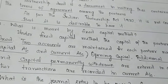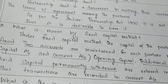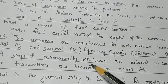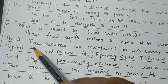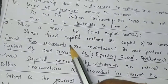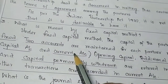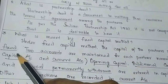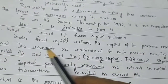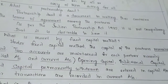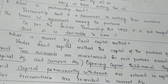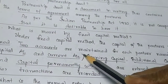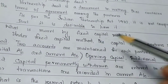Drawings mean capital is permanently withdrawn. Under the Fixed Capital Method, the capital of the partner remains fixed. Two accounts are maintained for each partner — namely the Capital Account and the Current Account.